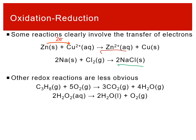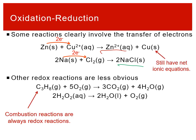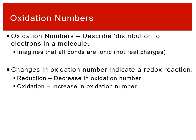There are redox reactions that are more opaque — where electrons aren't forming ions but the distribution of electrons changes. These involve covalent species where polarity shifts. Combustion reactions are always redox reactions. Even a single-reactant decomposition like H₂O₂ can be a redox reaction, but it's harder to parse without a systematic tool.